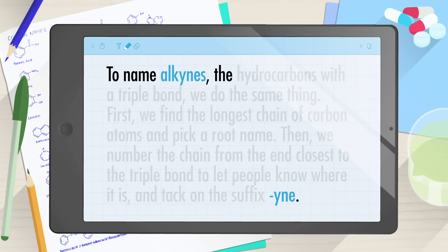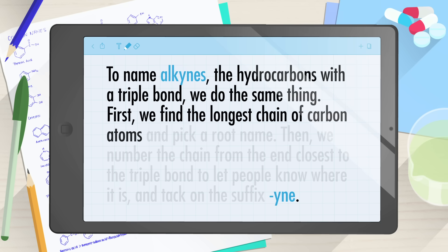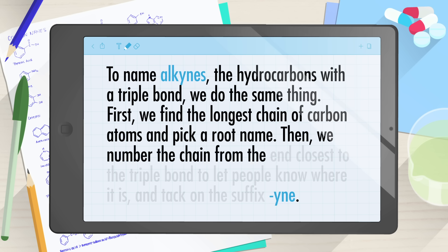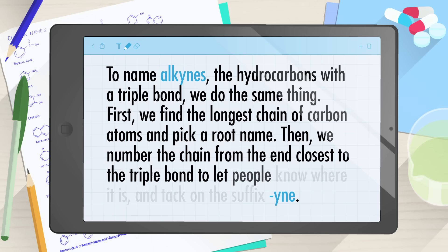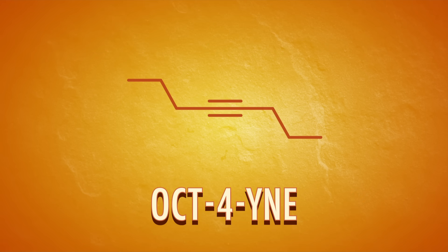To name alkynes, the hydrocarbons with a triple bond, we do the same thing. First, we find the longest chain of carbon atoms and pick a root name. Then we number the chain from the end closest to the triple bond to let people know where it is, and tack on the suffix "-yne". For example, an 8-carbon chain with a triple bond in the center would be called oct-4-yne.